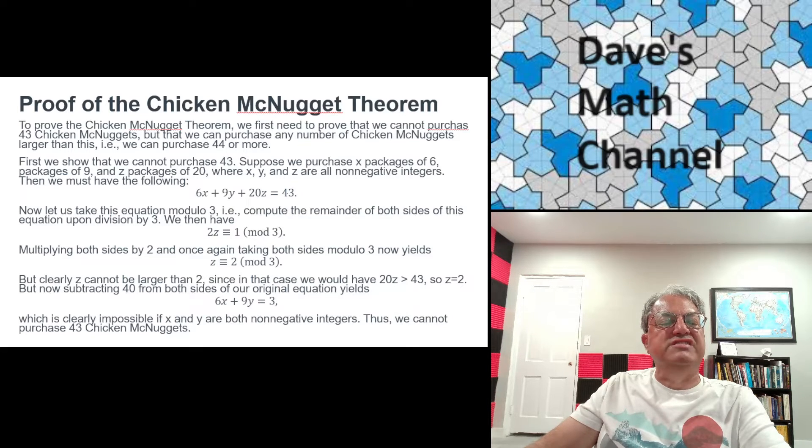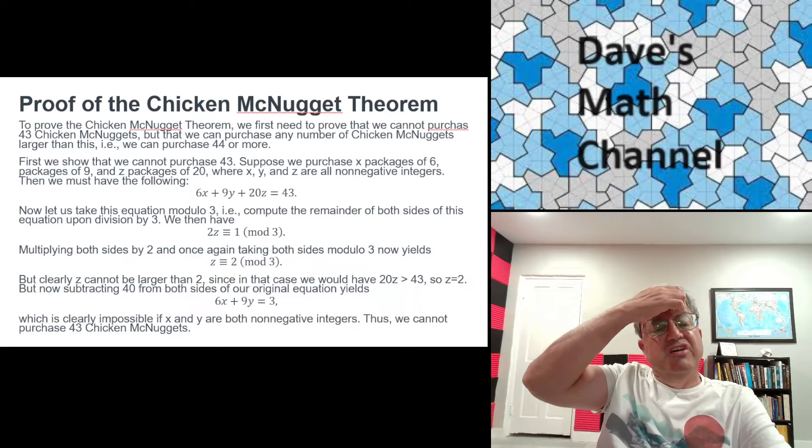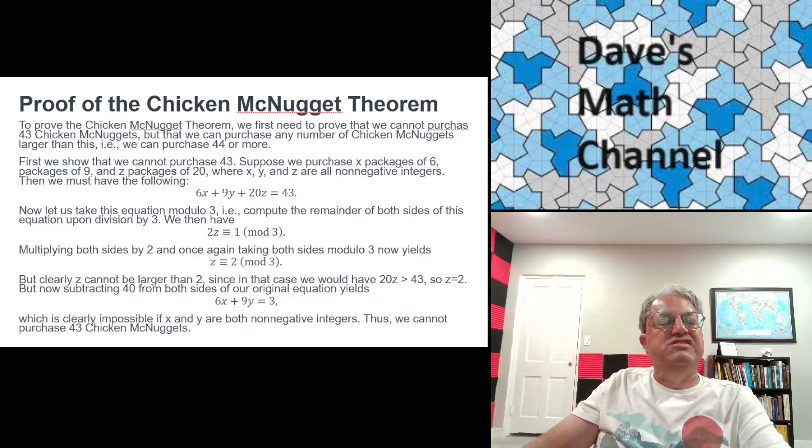Well, how do we prove that this is impossible? We do modular arithmetic. So what we do is we take both sides of this equation modulo 3. What that really means is we take the remainder of division by 3 of both sides. Well, it's pretty obvious that if you divide 43 by 3, you get a remainder of 1. 43 is 42 plus 1, and 42 is divisible by 3. So you get 1 on the right side.